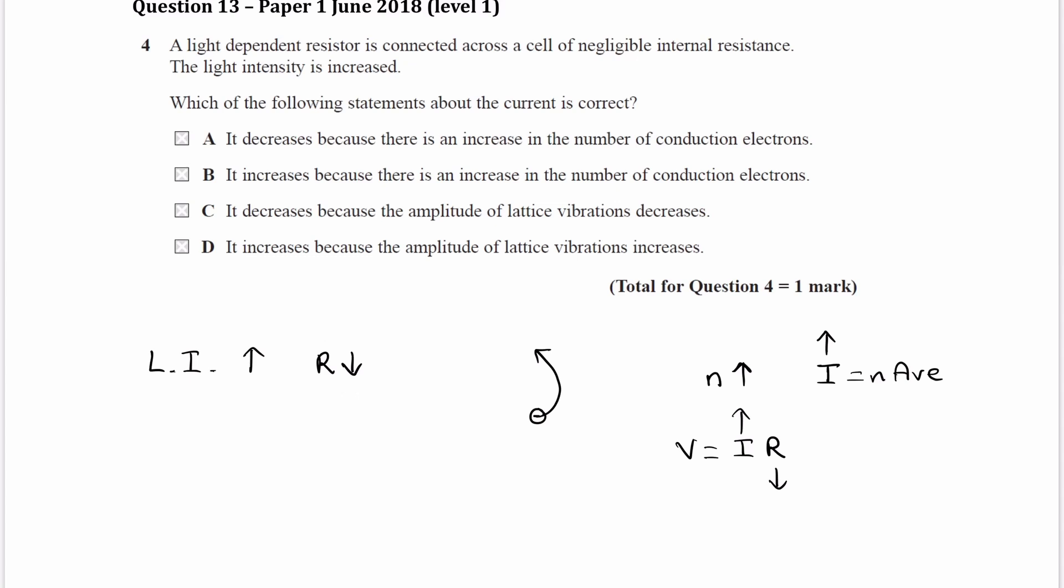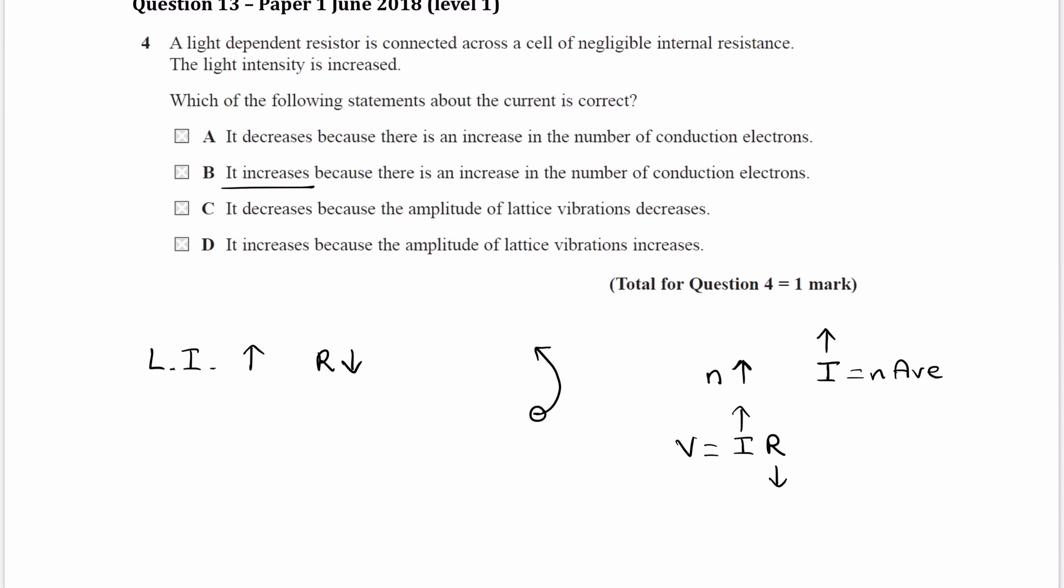Let's look at the options. We know there's an increase in the number of conduction electrons. What happens to the current? We know the current increases, so we can rule out some answers. It's either going to be B or D.